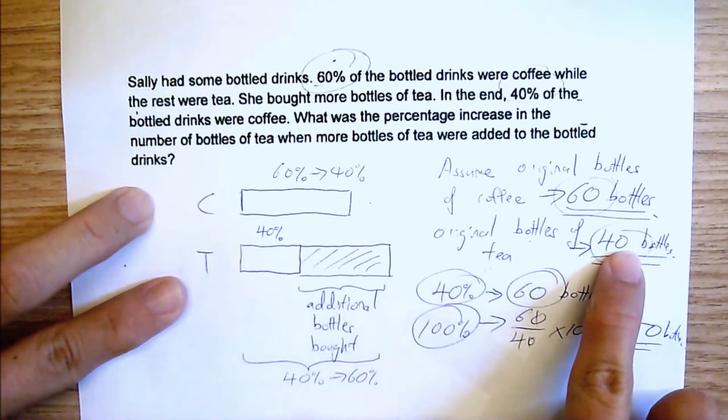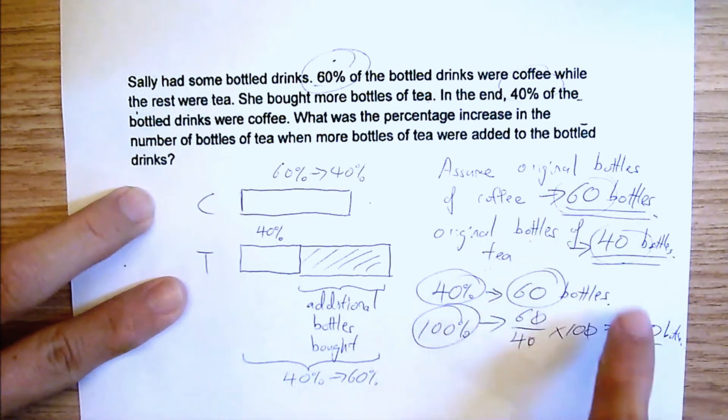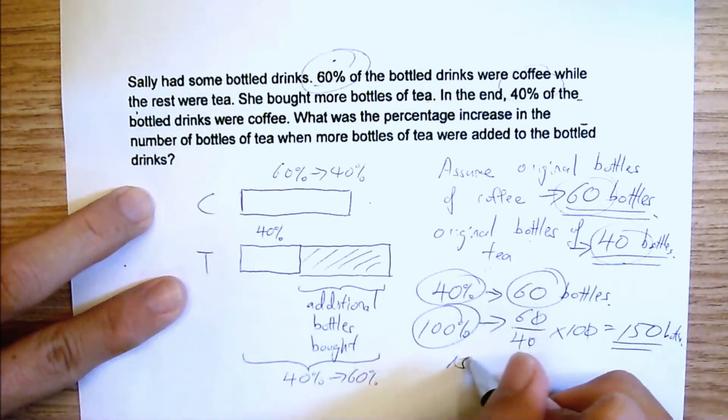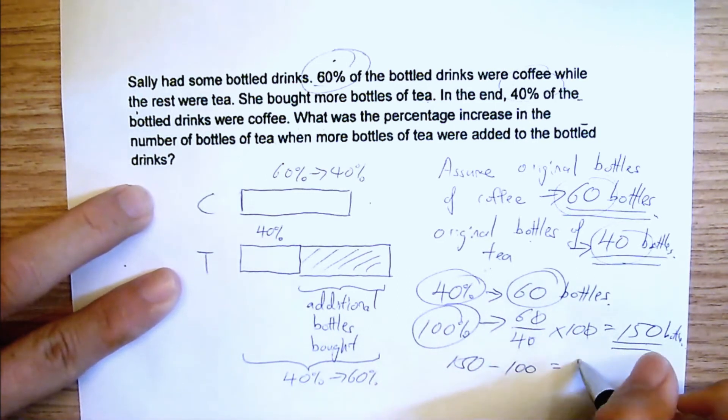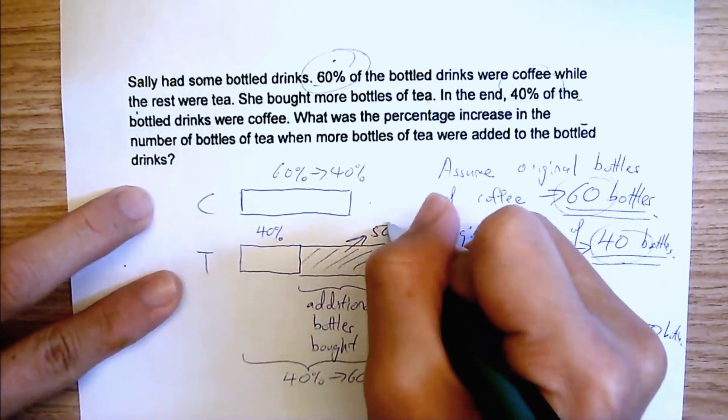Originally, only 40, and originally, in total, that's 100. But she had 150 in the end. So you had 150 minus 100, which means that she bought 50 bottles. So this is 50 bottles.